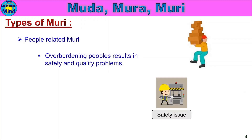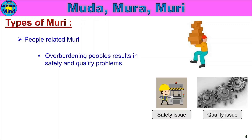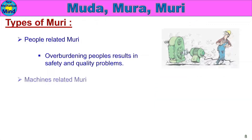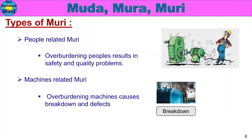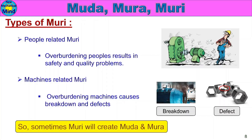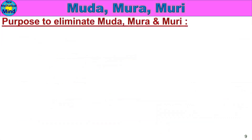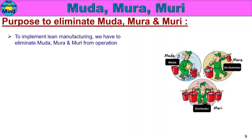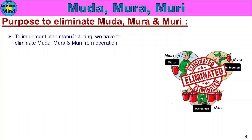Mura results in safety and quality problems. Operator capacity or load can sometimes cause safety problems or quality problems. Overload can cause machine breakdown or defective parts to be produced. To implement Lean Manufacturing, we have to eliminate Muda, Mura, and Muri from operations.